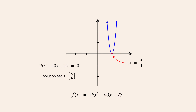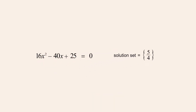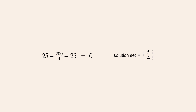To check our results once again, we can substitute this value into the quadratic equation to see if it produces a true statement. Substituting five-fourths for x gives us five-fourths squared in the first term, which is twenty-five sixteenths, and sixteen times twenty-five sixteenths is twenty-five. In the second term, forty times five-fourths is two-hundred fourths, or fifty. And since twenty-five minus fifty plus twenty-five is zero, we have confirmed that five-fourths is a solution to this quadratic equation.